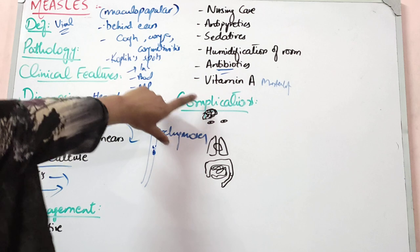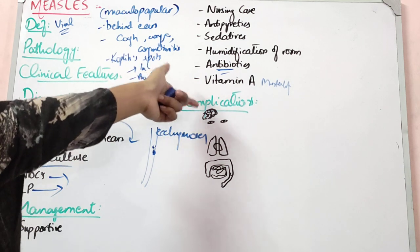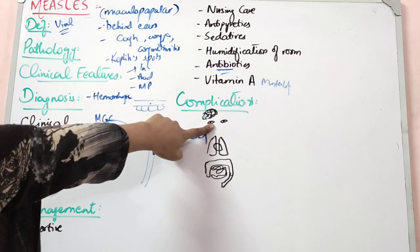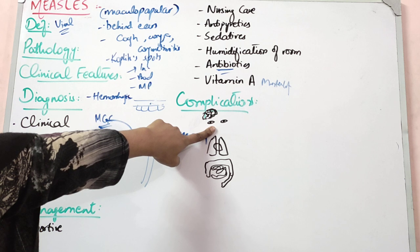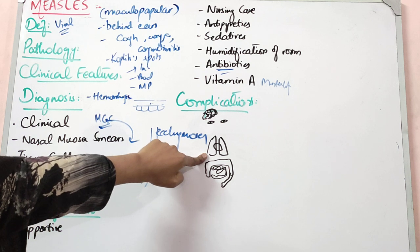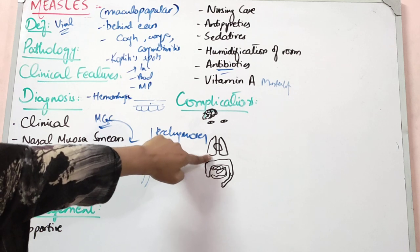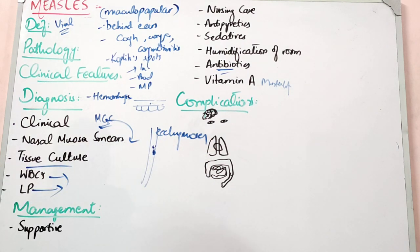For complications, if measles affects the eyes, it can cause optic nerve damage, corneal ulceration, and conjunctivitis. In the respiratory system, it can cause pneumonia. If it involves the heart, it can cause myocarditis and pericarditis. If it comes to the GIT, you get gastroenteritis. Wherever the virus goes, complications follow. These are all the complications of measles.